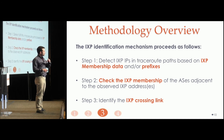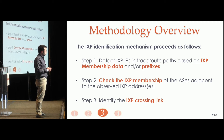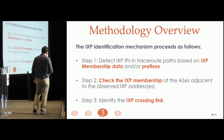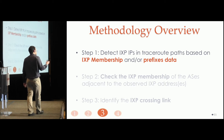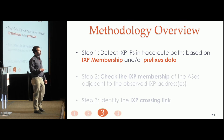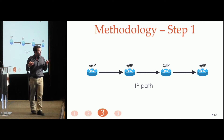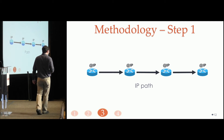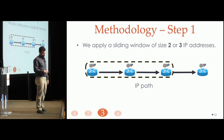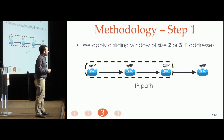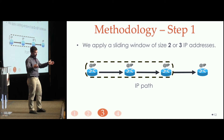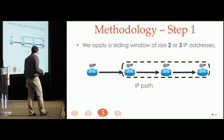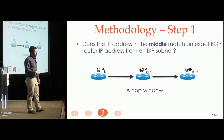In the third module, where we deployed our methodology, it consists of three main steps. In the first step, we try to find an IXP IP in the path based on IXP membership and prefix data. We use a sliding hop window of size 2 or 3 IPs — say size 3 — and for each hop window we apply our methodology, check for IXP crossings, slide the window, reapply the methodology, and so on. The first thing to check is whether the middle IP is an IXP IP — that is, if it is included in the IXP membership data or belongs to an IXP prefix.